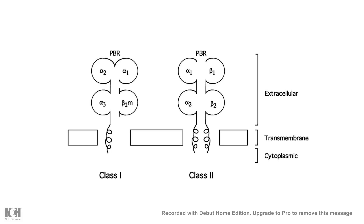In class 1 MHC, there is also a beta-2 microglobulin domain, which is entirely encoded by a very different gene from a different chromosome.